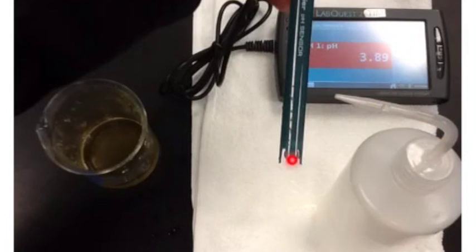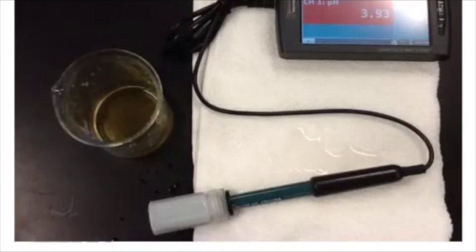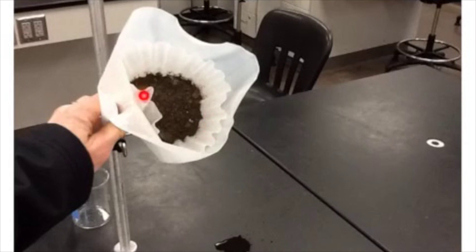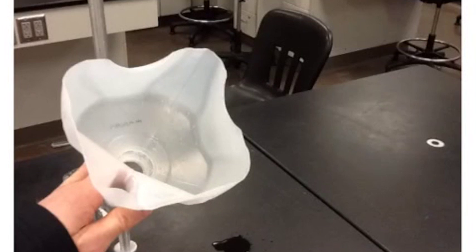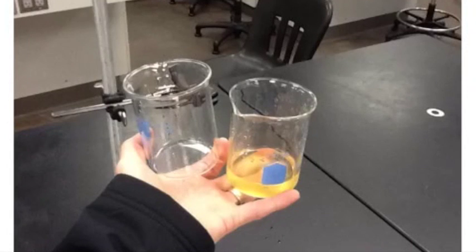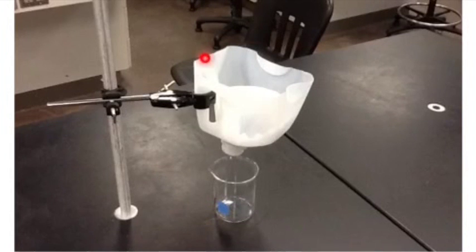Rinse off the pH meter again and return it to its cap with the liquid storage solution. Simply dispose of the filter paper with the soil sample in the garbage. Rinse out the milk jug filter. Rinse out your glassware. Replace your setup and run it a second time.